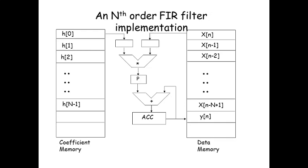An Nth order FIR filter implementation in general is given. Every time a filter coefficient and input sample is moved to a register, it is multiplied and the resultant product is added and stored in an accumulator. Finally, the resultant is stored in the output y(n).